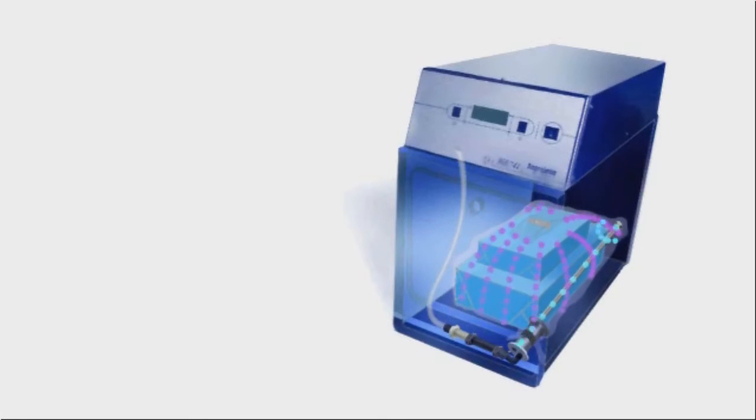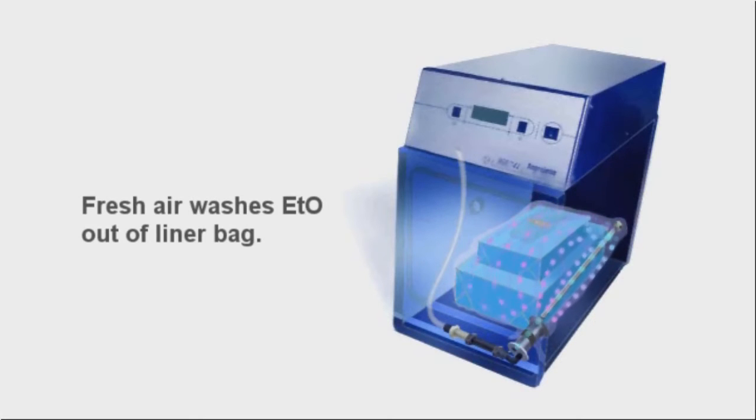The sterilization liner bag is vacuumed down, removing remaining ethylene oxide from the system. A valve opens, allowing fresh air to travel down the probe and into the bottom of the bag, represented here by the blue dots.